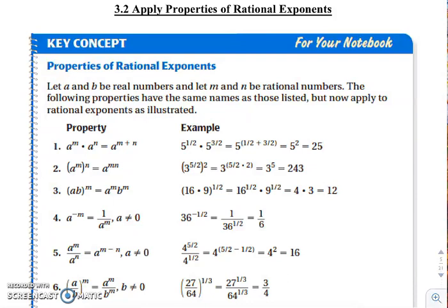If you look down through your examples, all the rules are still the same. When you're multiplying, you add your exponents. Power to a power, you distribute or multiply that power in. So when you have a negative, it still goes to the denominator of your fraction.